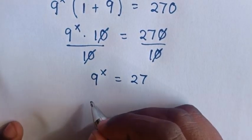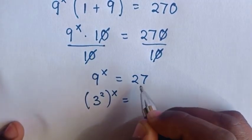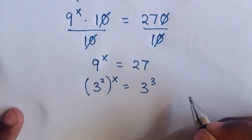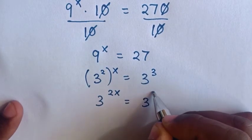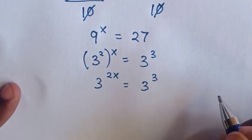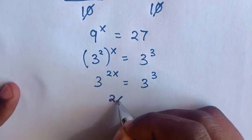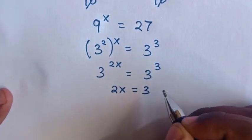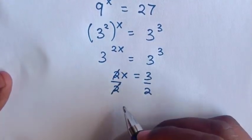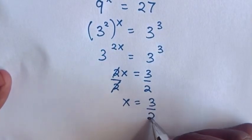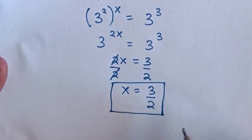Here, 9 is the same as 3 squared, so bracket power x is equal to 27, which is the same as 3 power 3. Then it will be 3 power 2x is equal to 3 power 3. They have the same base but different powers, so we compare the powers: 2x is equal to 3. We divide by 2 on both sides, so x is equal to 3 over 2.